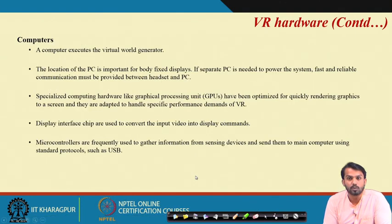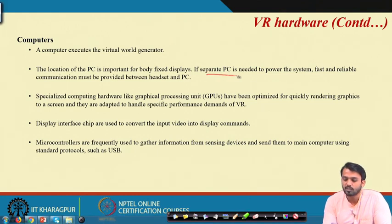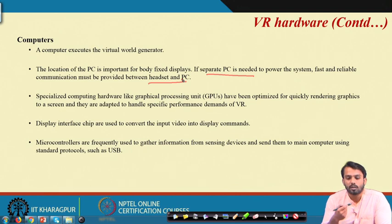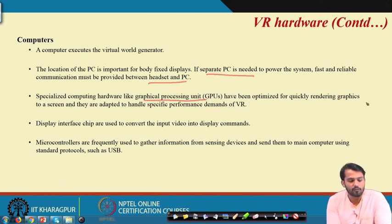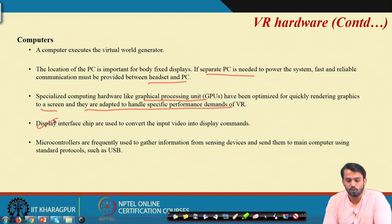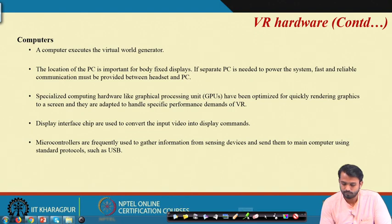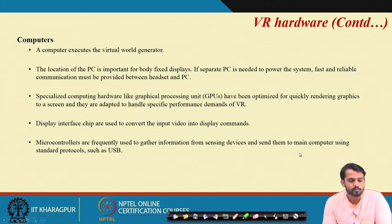Regarding the computers that execute virtual world generation, the location of PCs is very important for body-fixed displays. If separate PCs are needed, fast and reliable communication must be provided between the headset and PC. Specialized computing hardware like GPUs have been optimized for quickly rendering graphics and are adapted to handle the specific performance demands of VR applications. Display interface chips convert onboard video to display commands, and microcontrollers frequently gather information from sensing devices and send it to the main computer using standard protocols such as USB.